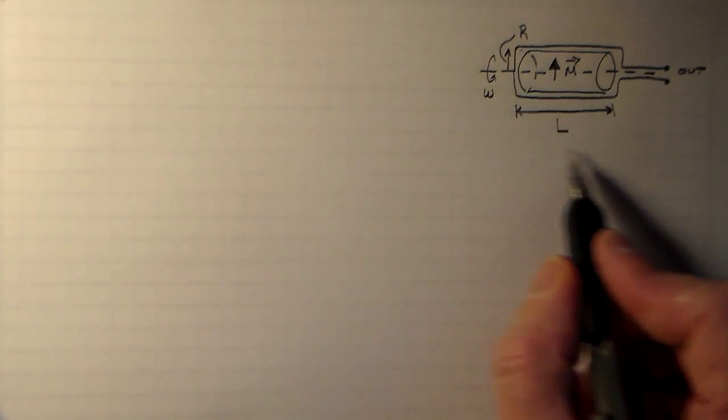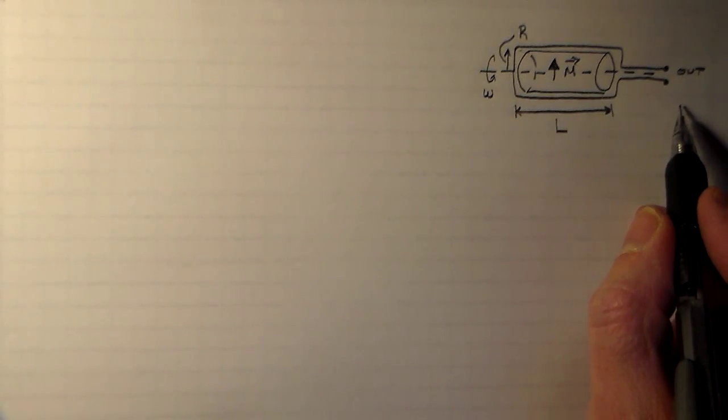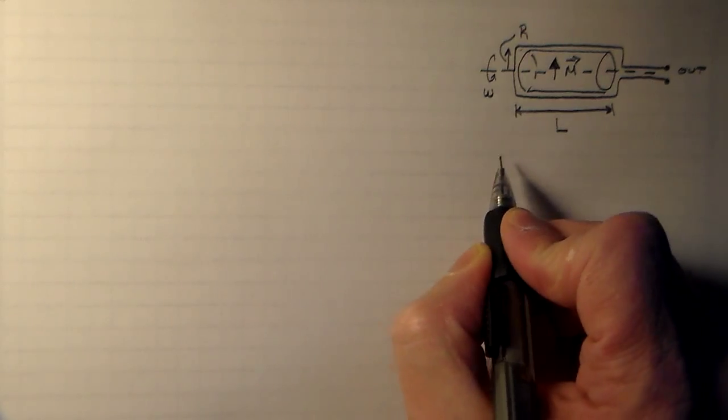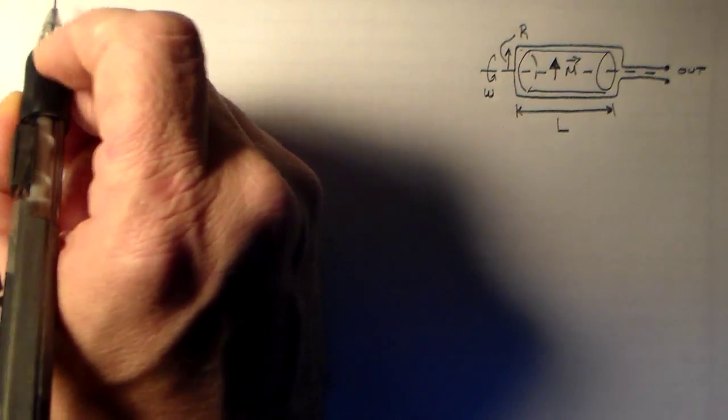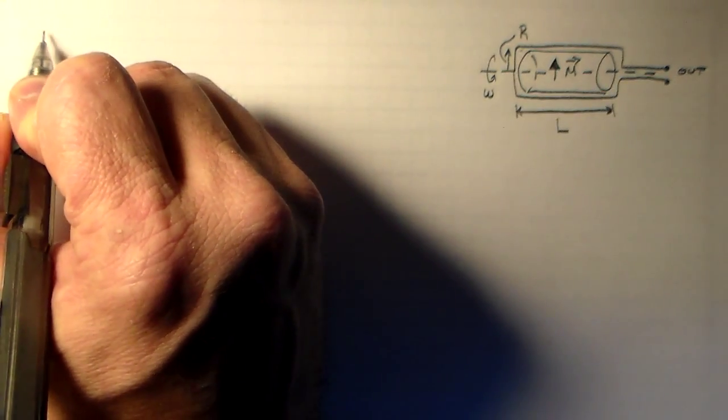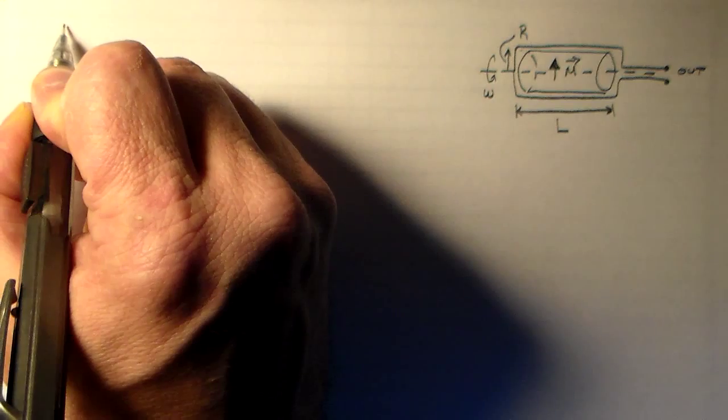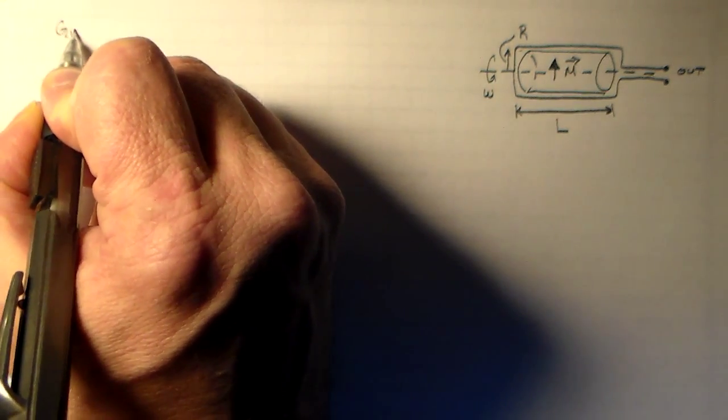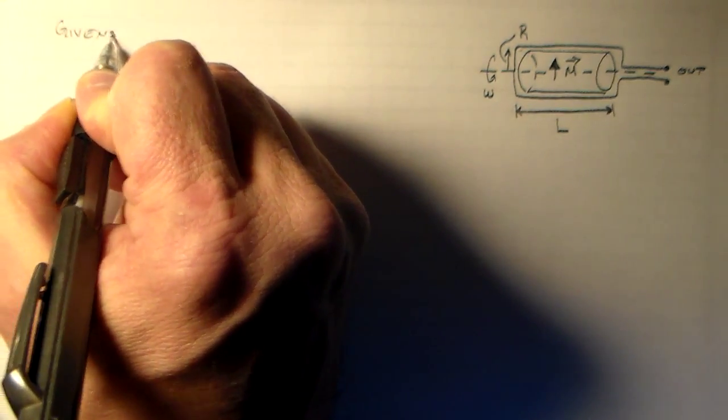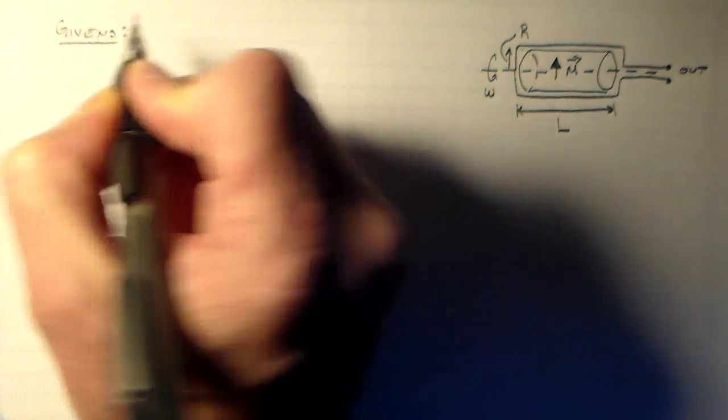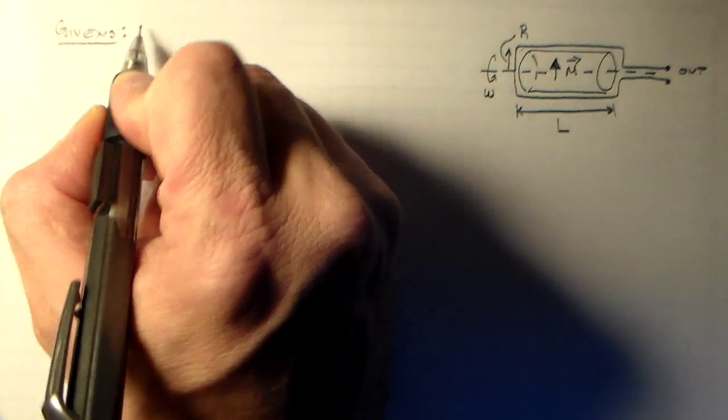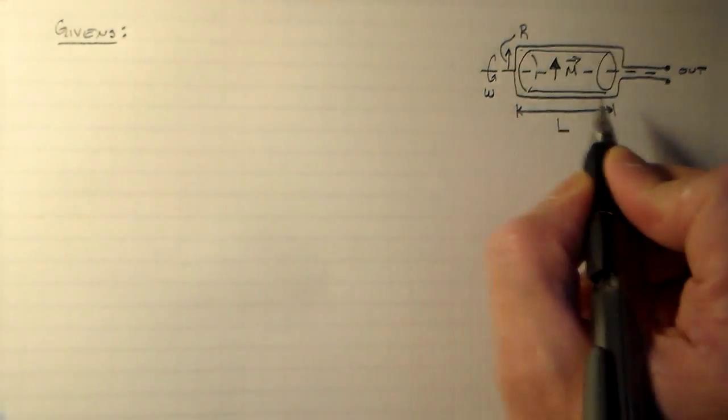So now in the end we want to get some EMF out of this. But the first thing we'd probably like to do is just sort of list what we know. I always want to list what we know. So I like to call those the givens.